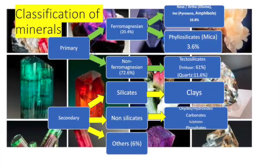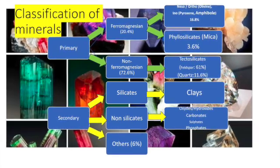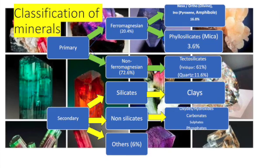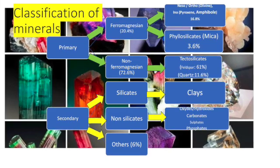For example, mica is a primary mineral that alters to form illite, a secondary mineral. Secondary minerals are formed by weathering, diagenesis or by low temperature alteration of a pre-existing rock.